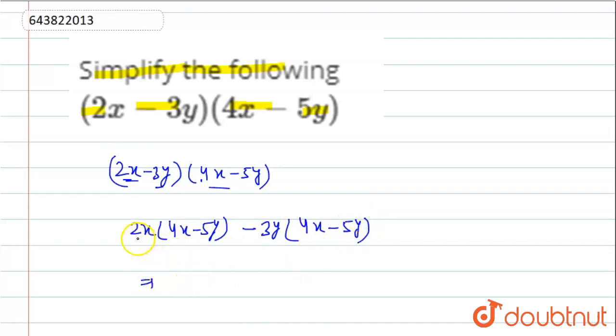Now we multiply 2x into 4x. This will be equal to 2 into 4, 8x into x is x². Minus 2 into 5, this will be equal to 10.